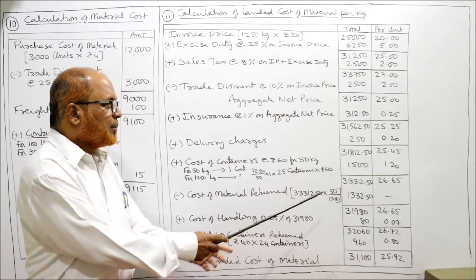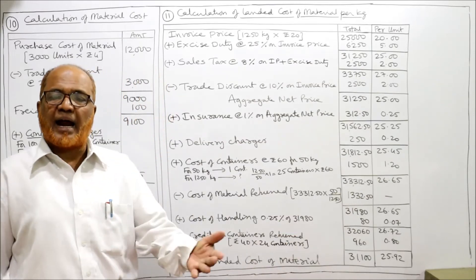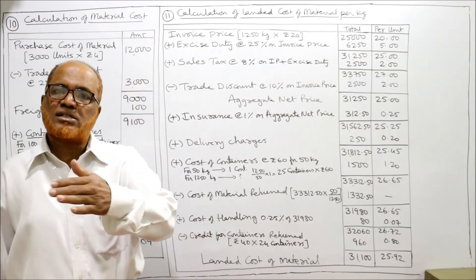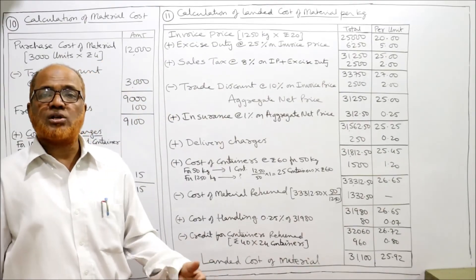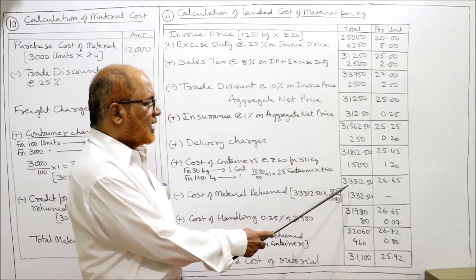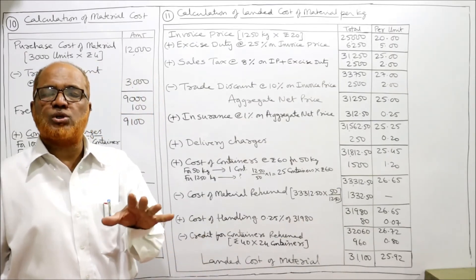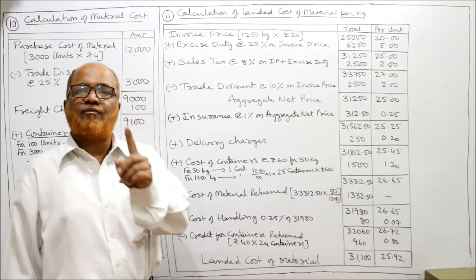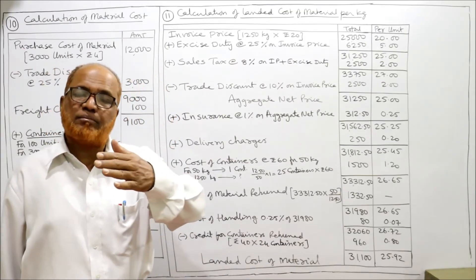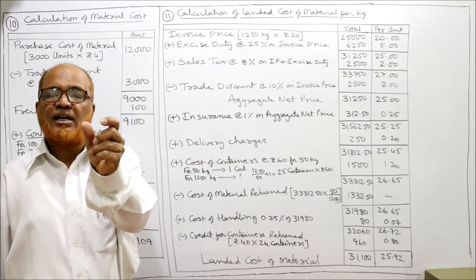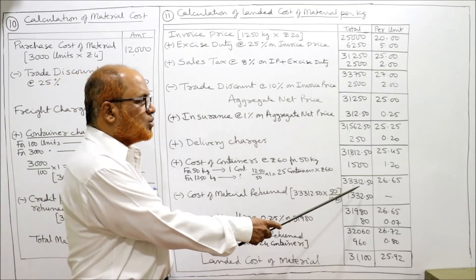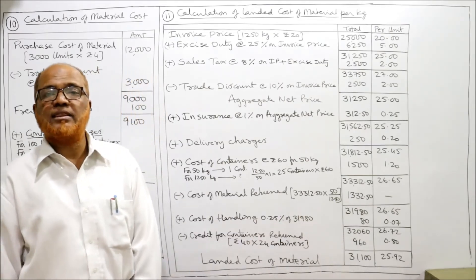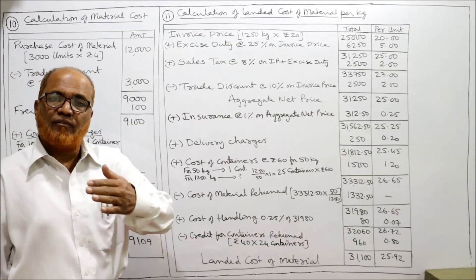After adding container cost: 33,312.5 rupees and 26.65 per kilogram. Now one container of material is rejected and returned back to the supplier. The total cost so far is 33,312.5 rupees for 1250 kg. One container holds 50 kg, so cost of 50 kg returned = (50 ÷ 1250) × 33,312.5 = 1,332.5 rupees. This is the cost of one container returned.